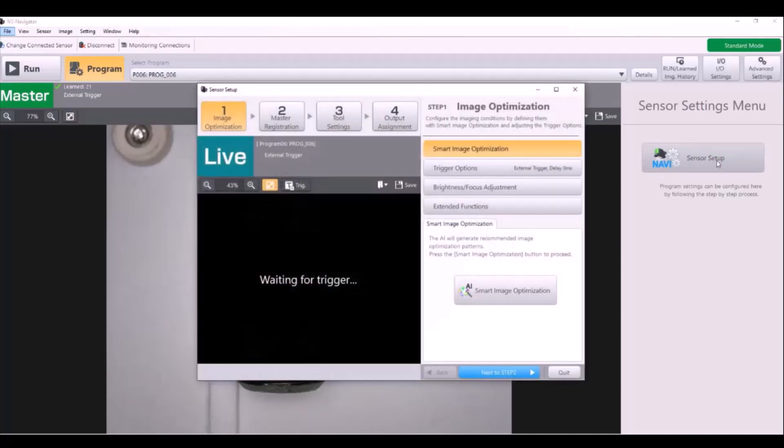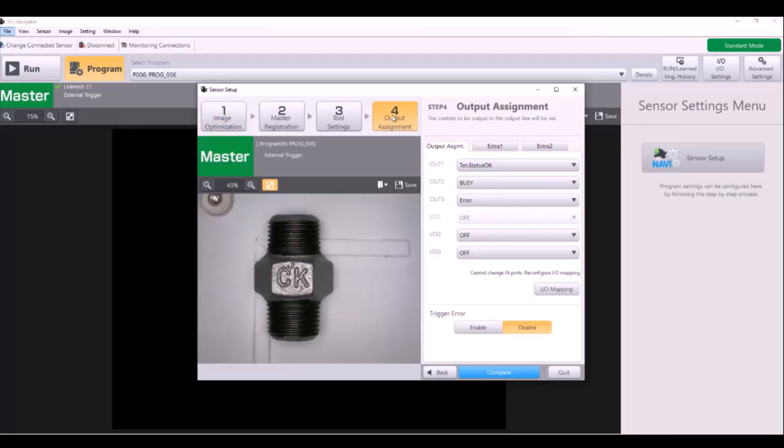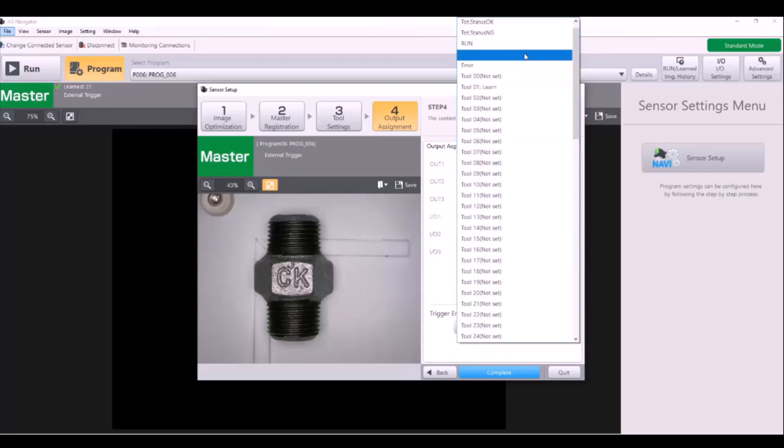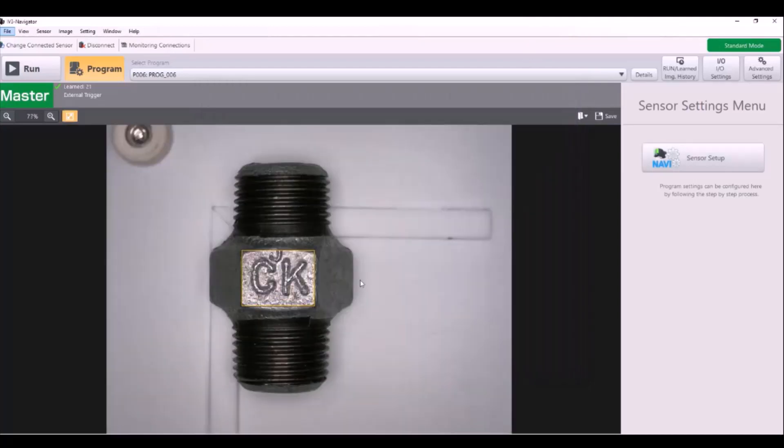Next, we're going to go into the sensor setup. You can skip ahead to step four, your output assignment. And here is where you can configure your output 1 function. I'm going to keep it on total status OK because I want my light to turn on for a good part.